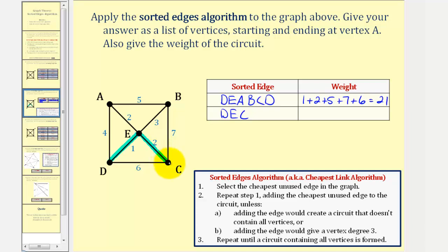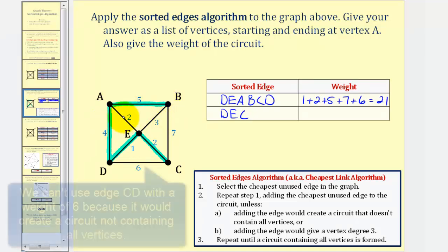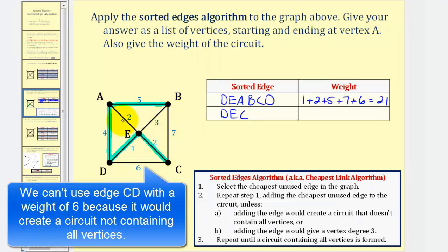The next cheapest edge would be edge E, A — we can't use that because it gives vertex E degree three, the same with edge E, B. So the next cheapest edge would be edge A, D with a weight of four. The next cheapest edge would be edge A, B with a weight of five. And then finally, edge B, C with a weight of seven.